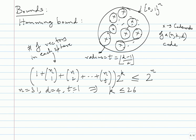The general approach is: design something, compute the bound for the same parameters, and see how close you are. If you are close to the bound you can feel confident you have done something very good. That is the Hamming bound. The next bound, also very easy to derive, is the singleton bound.